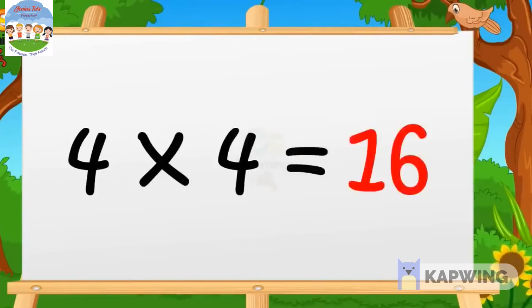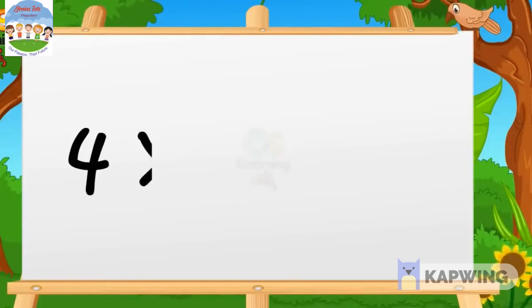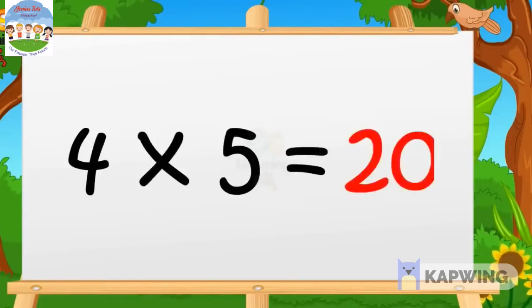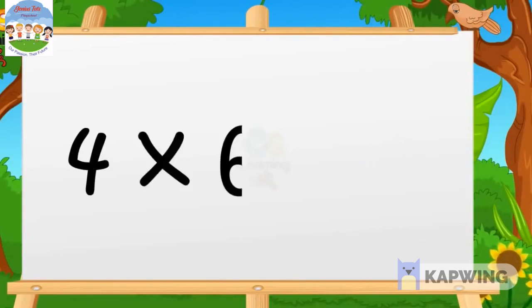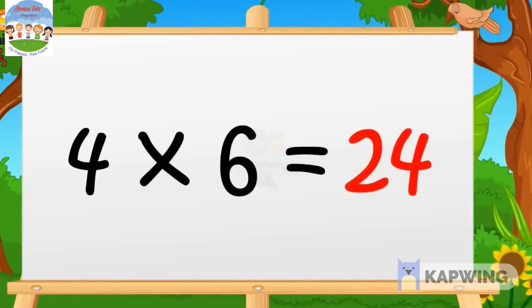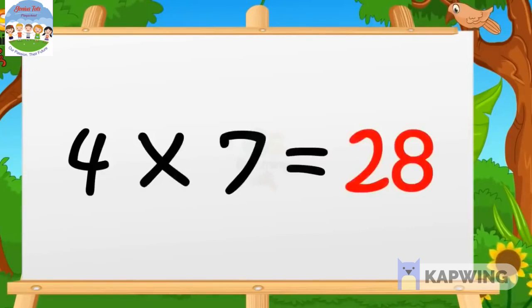4 fours are 16. 4 fives are 20. 4 sixes are 24. 4 sevens are 28.